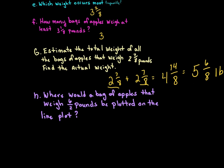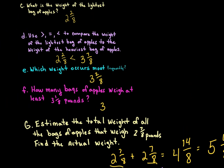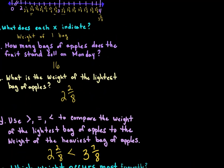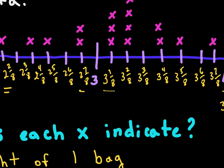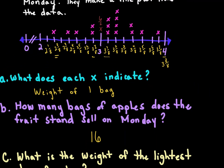Where would a bag of apples that weighs six-halves pounds be plotted on the line plot? Just like we did earlier, we divide: 2 goes into 6 three times with no remainder. So six-halves equals 3 whole. We plot a red X at three to show the new measurement — six-halves is equal to three wholes.